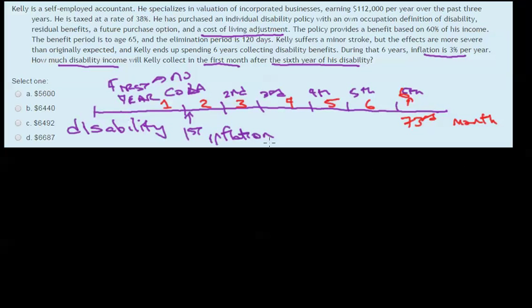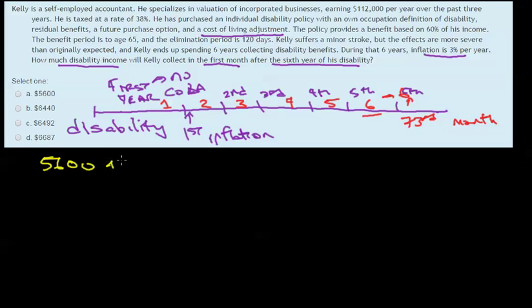At this point, only after that sixth year, we would have had the sixth adjustment for the disability benefit. So simply what we're going to do here is start with his actual disability benefit, which would be $5,600, and we're going to apply that 3% inflation a total of 6 times.